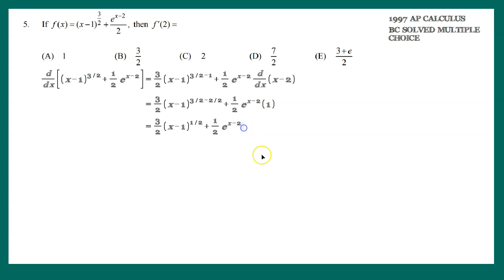So remember that this represents the following. This is f prime of x. Let's just evaluate this at 2 now. So f prime of 2 would be equal to 3 halves, 2 minus 1 raised to the 1 half, plus 1 half, and then e raised to the 2 minus 2. Let's work this out piece by piece.